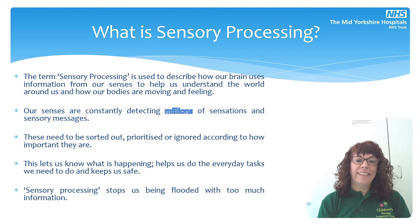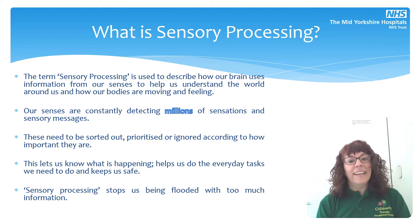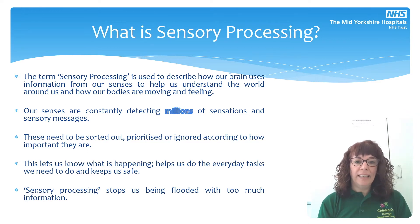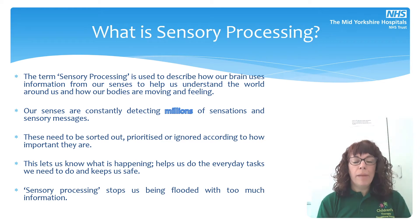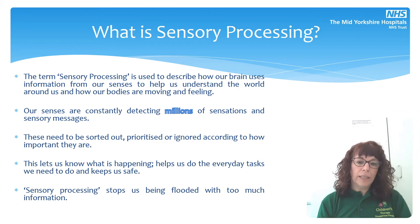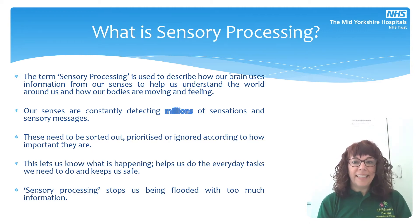So what is sensory processing? The term sensory processing is basically used to describe how our brain uses information from all of the different senses. It helps us understand what's happening around us, what we need to do, how our bodies are moving, and how we're feeling. Every second, our senses are detecting millions of sensations and sensory messages, and if we don't want to end up completely swamped and overloaded, we need these messages to be sorted out and prioritised into what's important and what isn't. This lets us know what's happening, helps us do everyday things, and keeps us safe.